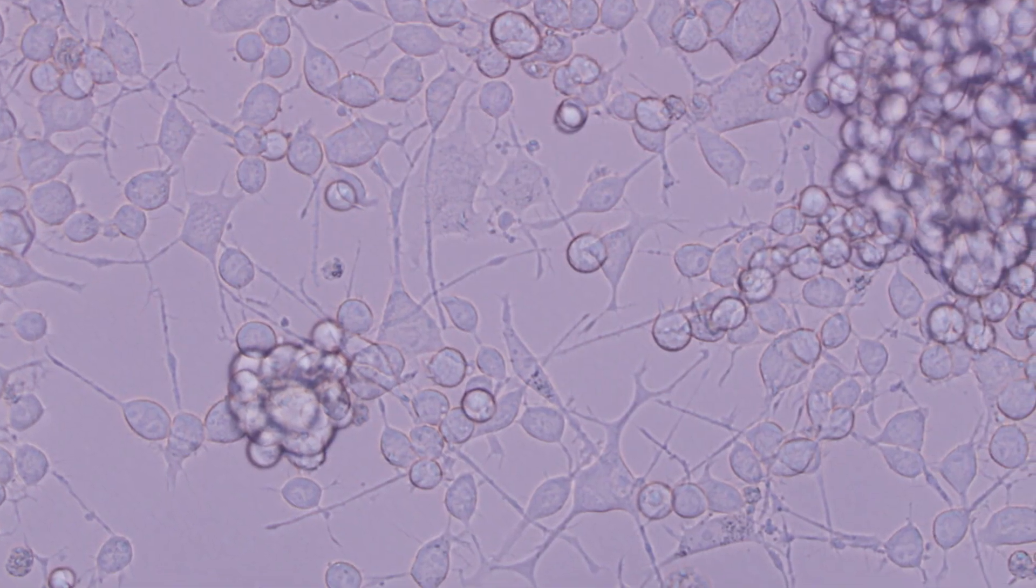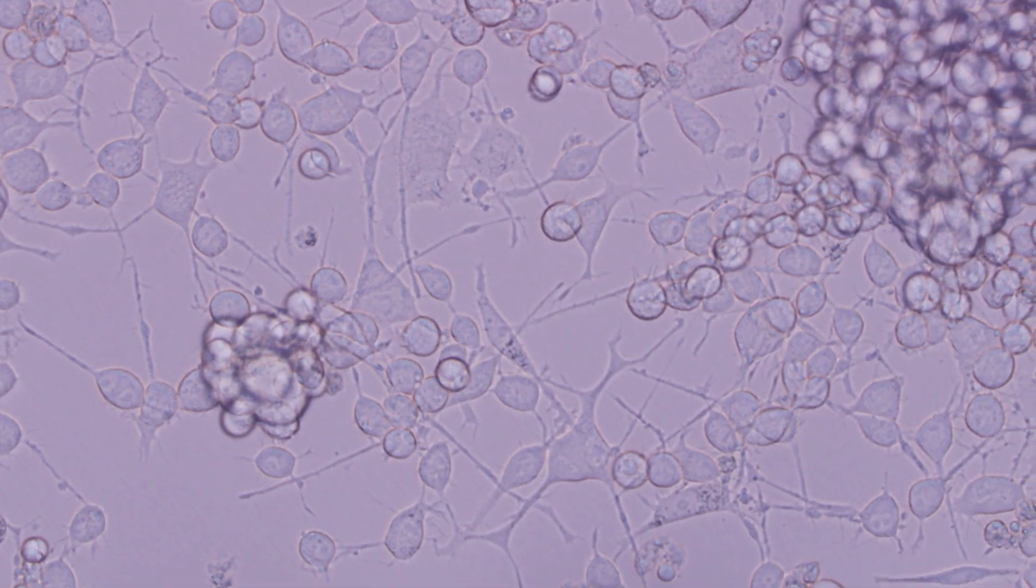The cells we will use in this lab is called PC12. PC12 is an established cell line initially derived from a rat neural endocrine tumor. It is an excellent tool to study cell signaling events triggered by growth factor like EGF which we will use in this lab.